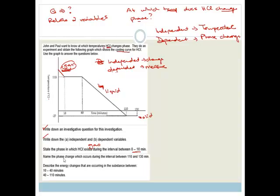Then it says, name the phase change which occurs between the interval 110 to 130 minutes. So 110 to 130 is when a liquid is becoming a solid. And if that's the case, what is happening? We can say it's freezing. Or you can even say it's solidification.